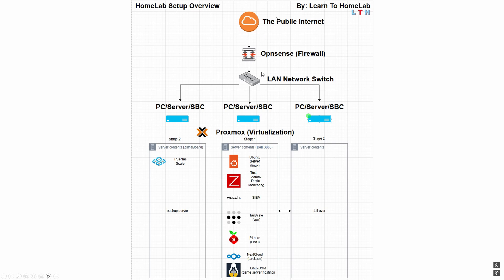So what are we going to cover? Throughout this course, looking from the top down, we start with the public internet. We're going to set up a firewall using OPNsense. After that, everything connects to an unmanaged switch — we'll briefly cover that. Then we go down the middle column with a server using Proxmox for our virtualization, get familiar with Ubuntu Server Linux, which is a Debian-based distribution, device monitoring, how to use a SIEM, and how to create a VPN through Tailscale so you can connect to all your services outside your home.